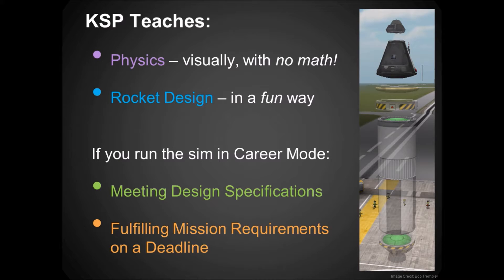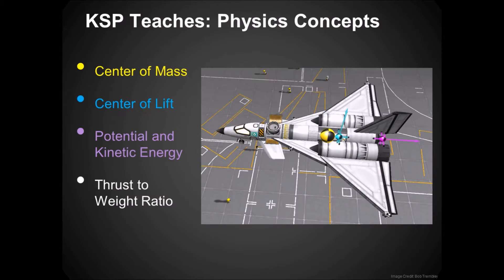It's got several different modes of play. If you run career mode, you literally have to complete contracts — get this payload into this specific orbit by this amount of time and things like that. It teaches you physics concepts, and the educational version has a whole bunch of widgets which go into this in much more detail. You can learn about lift, flight, potential energy, kinetic energy, and stuff like that. And that's mostly Newton's laws.